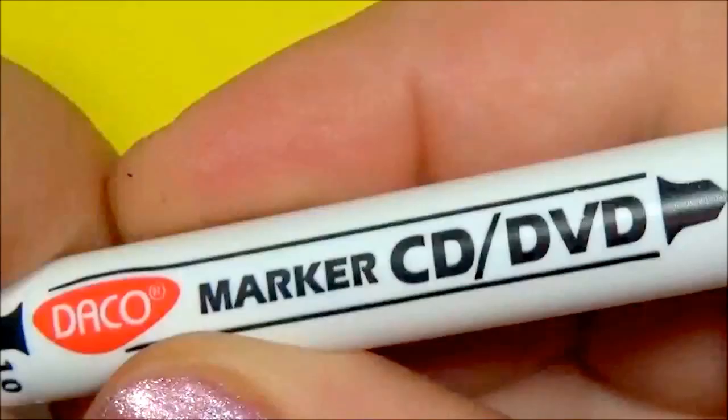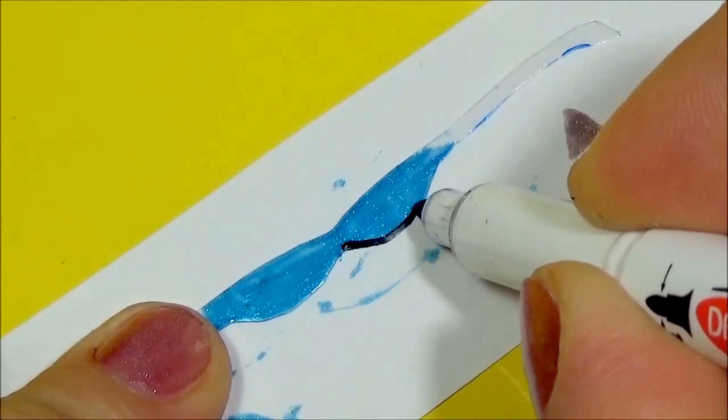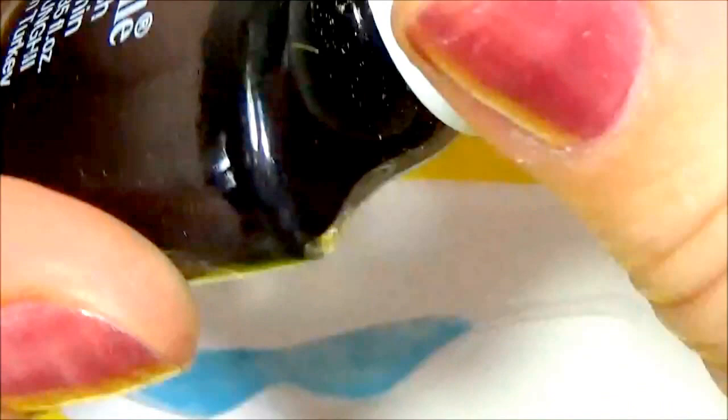Take a permanent marker and draw the frame. Or take a black nail polish and paint the frame.